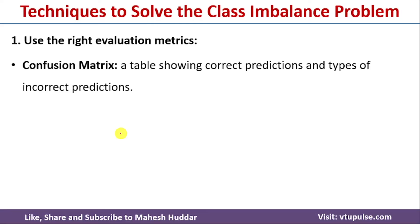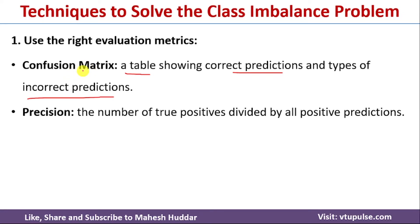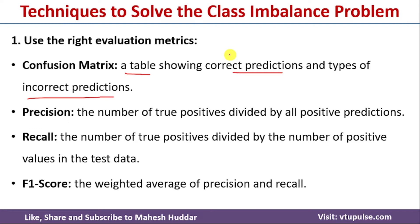The first technique is to use the right evaluation metrics. Instead of relying on accuracy, we can use a confusion matrix, which shows correct predictions and the types of incorrect predictions. From the confusion matrix we can calculate precision, recall, and F1 score. Precision is true positives divided by all positive predictions; recall is true positives divided by all positive values in the test data; and F1 score is the weighted average of precision and recall.